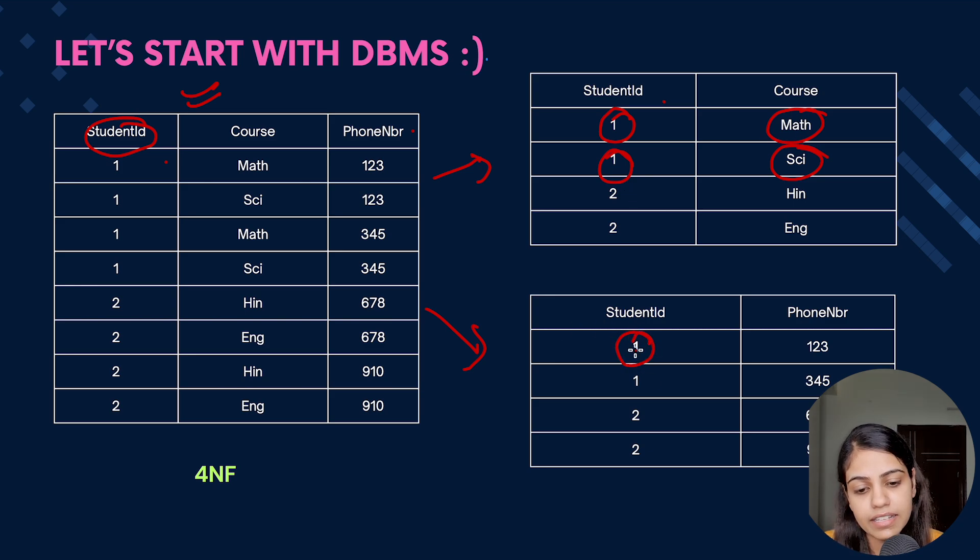And now coming to the second table, it has happened in the same way that the StudentID is now mentioned only two times and the phone number corresponding to the StudentID is mentioned. So you can say that the data redundancy or data duplicacy is reduced here, and since we have decomposed the table, we have normalized the table.